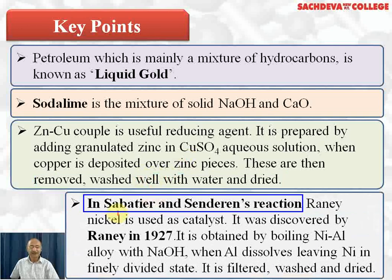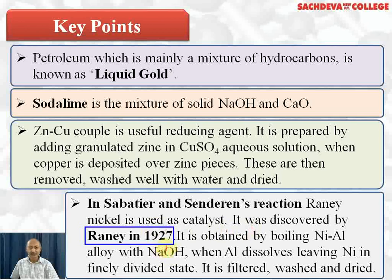In hydrogenation reactions, Raney nickel is used as a catalyst. It was discovered by Raney in 1927. It is obtained by boiling a nickel-aluminium alloy with NaOH, when aluminium dissolves leaving nickel in a finely divided state. Finely divided state is the best catalyst because of its maximum surface area. It is then filtered, washed, and dried.